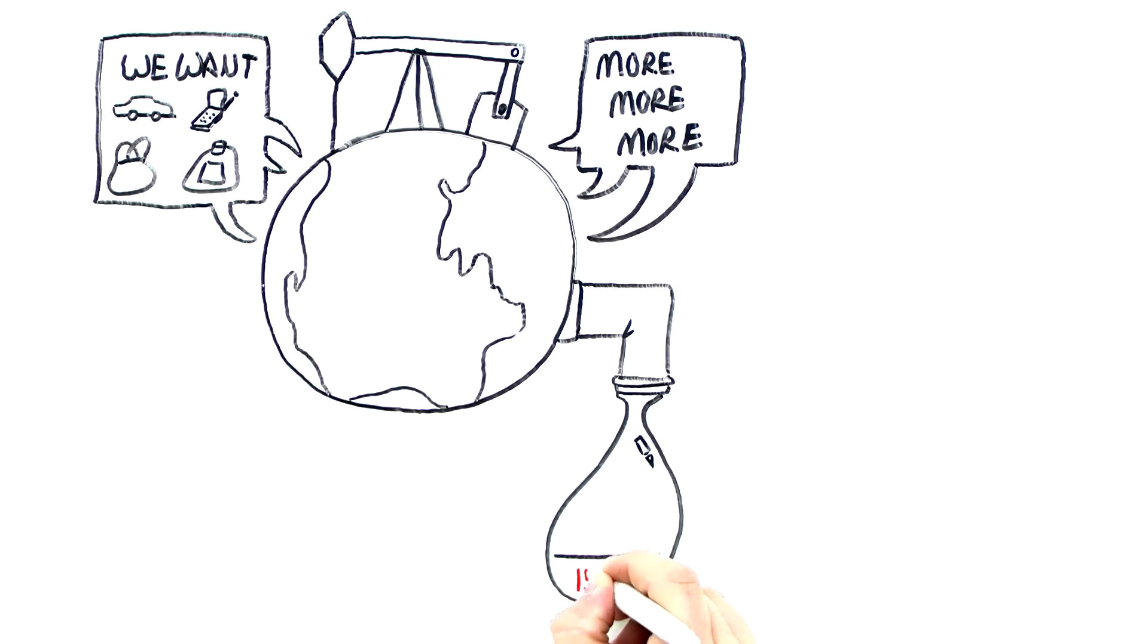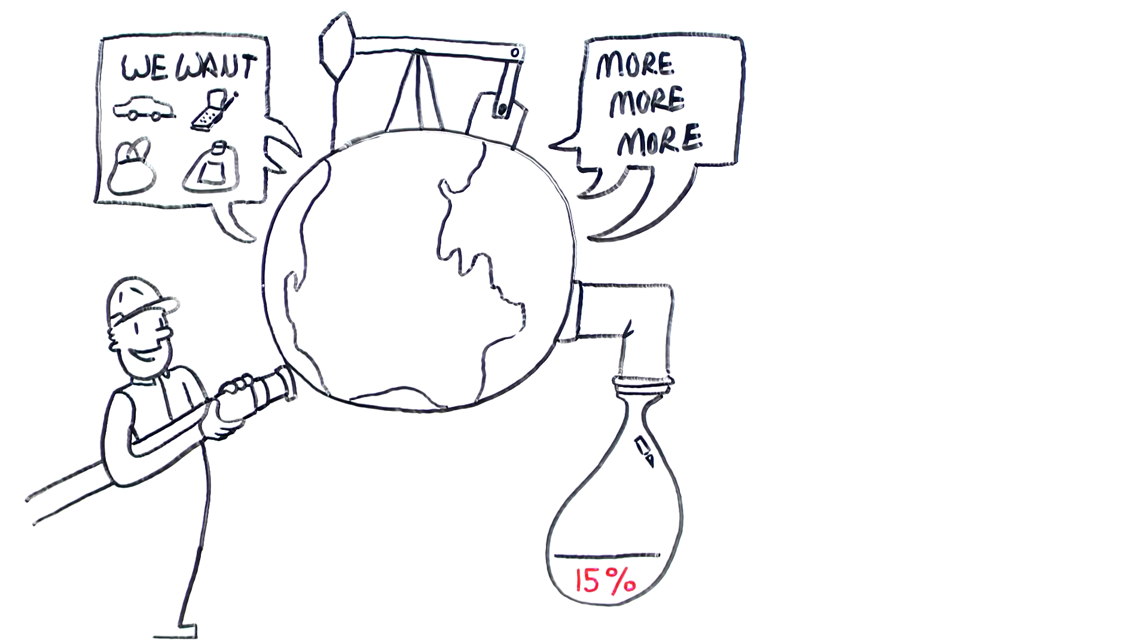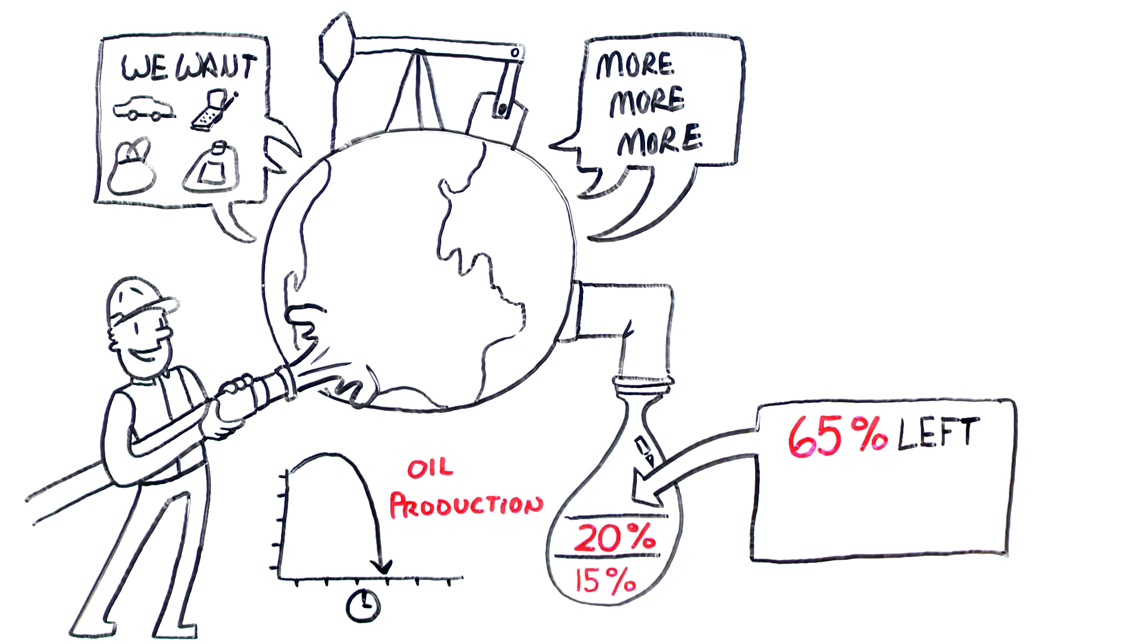Primary production typically recovers about 15% of the oil originally in place. Water flooding, or secondary recovery, usually produces another 20%. In most reservoirs, the effectiveness of water flooding decreases over time, leaving as much as 65% of the original oil in place in the formation.